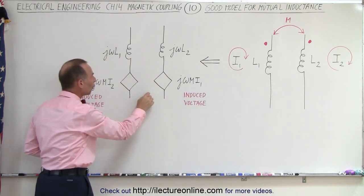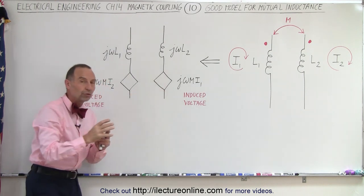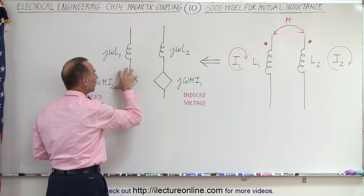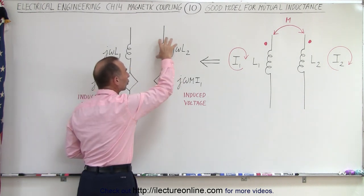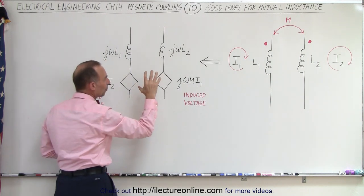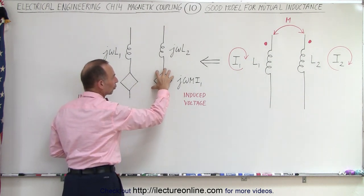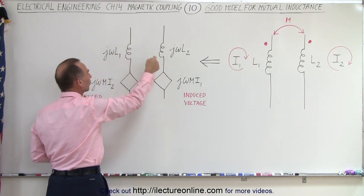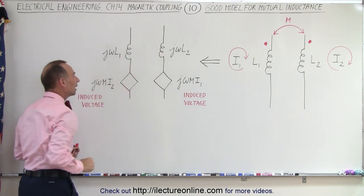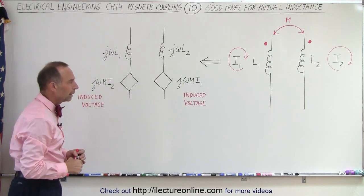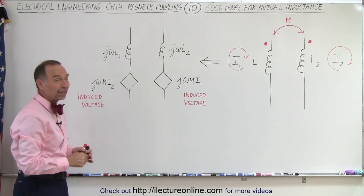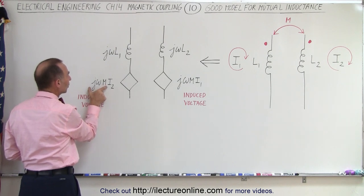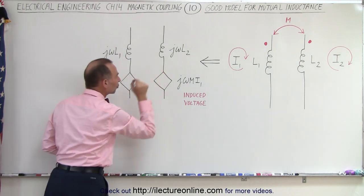We do it like this, where we represent what we call the induced voltage due to the mutual inductance. There is a voltage induced in circuit 1 because of mutual inductance and what happens in the coil in circuit 2, and we have a voltage induced in circuit 2 because of the mutual inductance and what happens with the current in circuit number 1. We set up an induced voltage represented by the mutual inductance times the current in the other circuit.